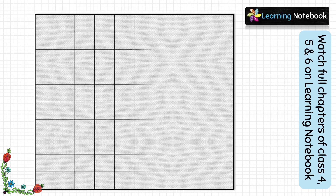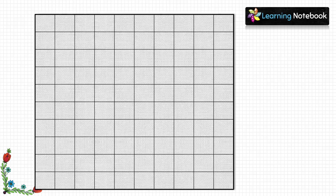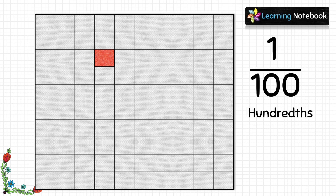In the first step, take a white chart paper and draw a grid of 10 by 10 units on it, where each square is of one unit. Now let's color any one square of this grid. The fraction of this colored square is 1 by 100, which in decimal numbers can be written as 0.01. So each square of this grid represents 1/100 or 0.01.